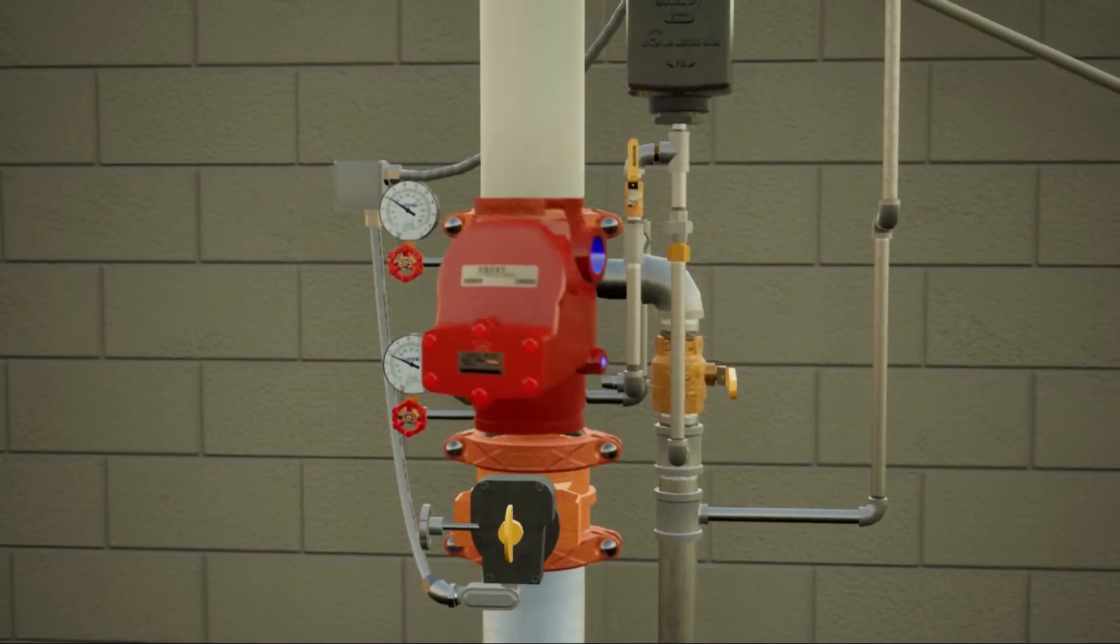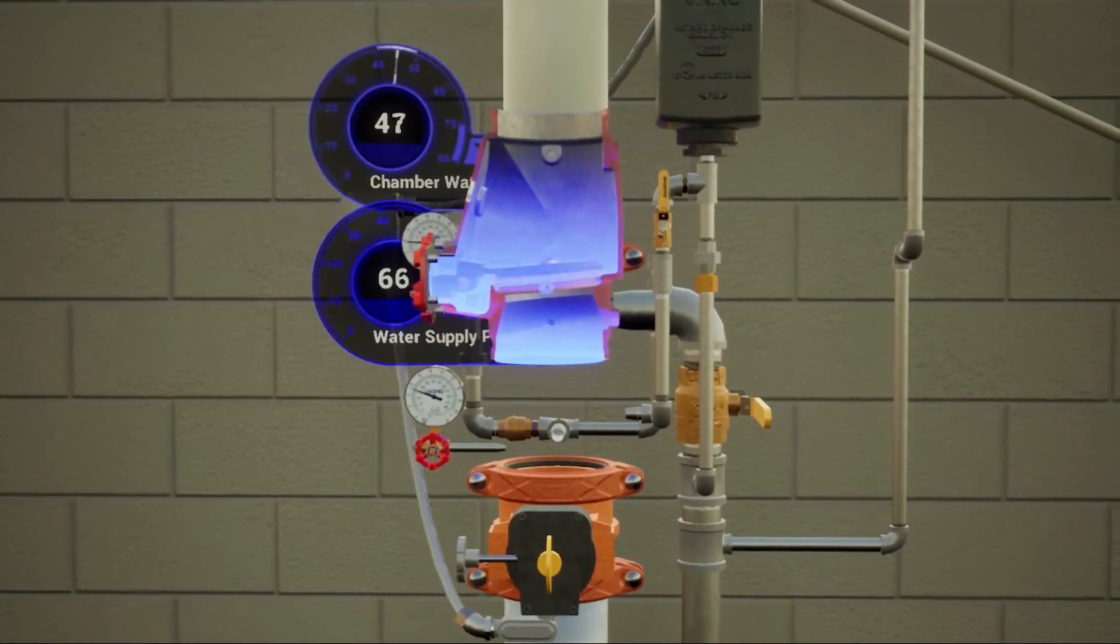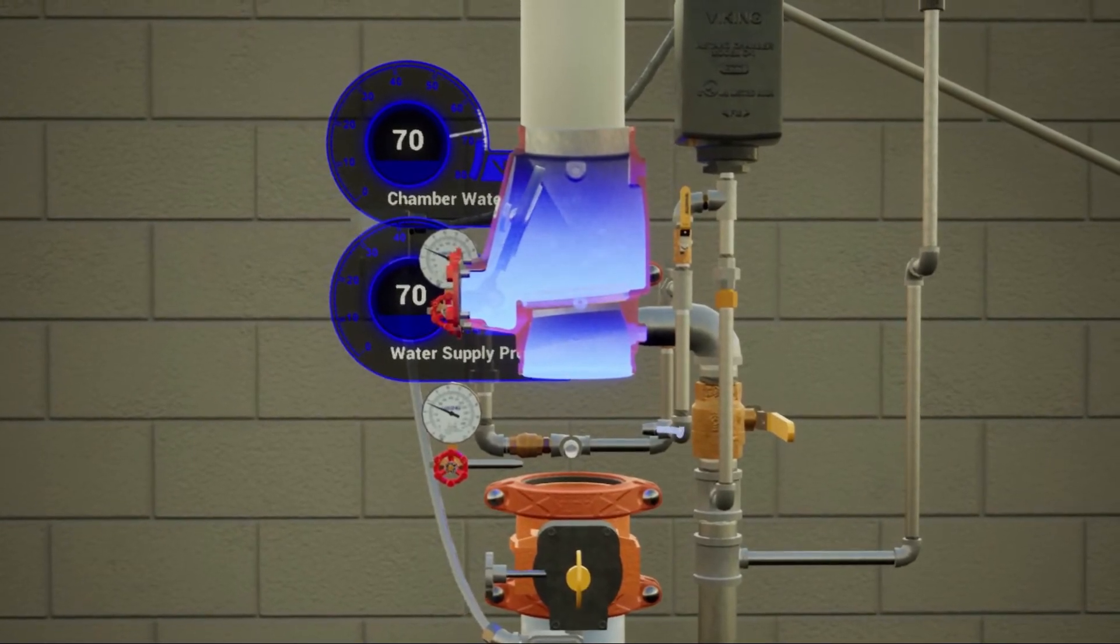After the sprinkler activates and water flow is established, the clapper is fully lifted off of the seat and the alarm ports are exposed, allowing water to enter and fill the alarm line.